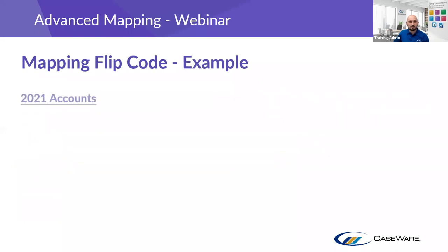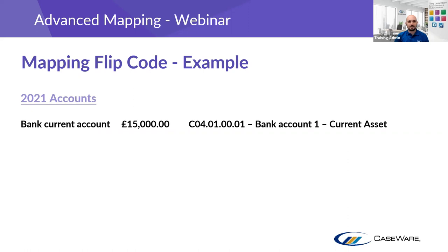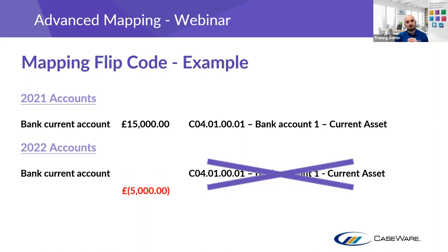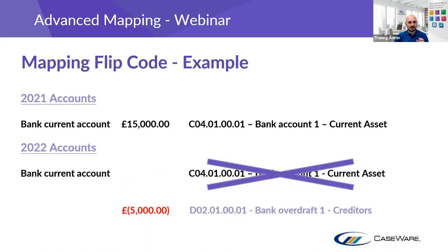Here's a clear example of flips: in 2021 we had a bank account with a £15,000 balance assigned to map code C0401 0001, a current asset. In 2022, we've got an overdrawn balance of £5,000 — but we're still assigning it to a current asset. Flips give you automation to move that £5,000 from current assets and assign it to a current liability — creditors due within one year. That same logic applies to groupings as well.